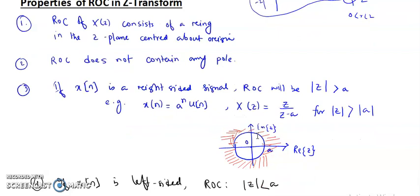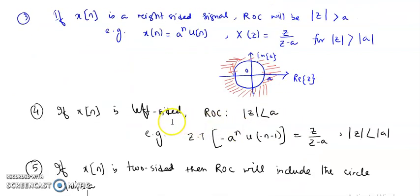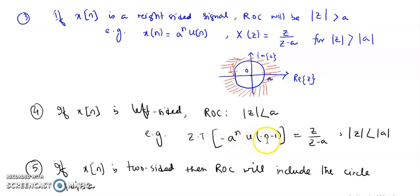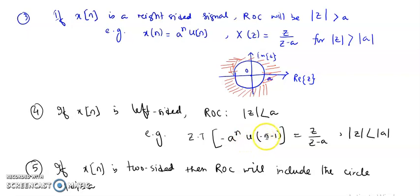Similarly, if x[n] is a left-sided signal, then all points |z| < |a| form the region of convergence for the z-transform. The signal −aⁿu[−n−1] has the same z-transform output as the earlier right-sided signal, but the ROC is different because this is a left-sided signal. Its ROC is |z| < |a|, meaning it lies inside the circle of radius |a|.